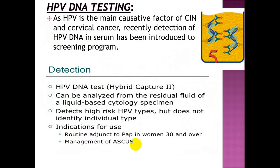HPV DNA testing: HPV is the main causative factor of CIN and cervical cancer. Detection of HPV DNA in serum has been introduced to screening programs. The hybrid capture 2 test can be analyzed from residual fluid of a liquid-based cytology specimen, detects high-risk HPV types but does not identify the individual type. Indications for use include as an adjunct to Pap in women 30 years and over, and in the management of ASCUS.